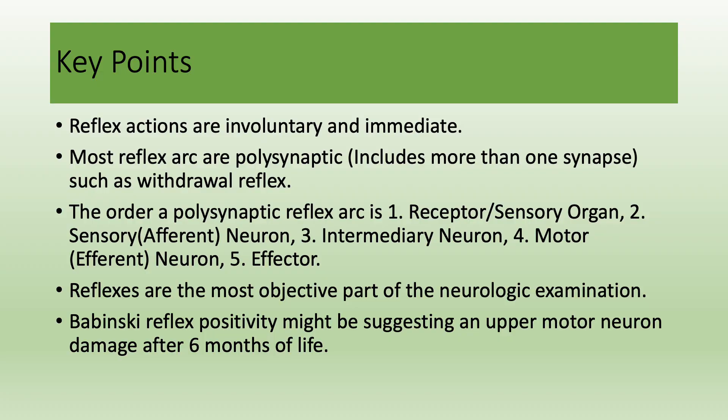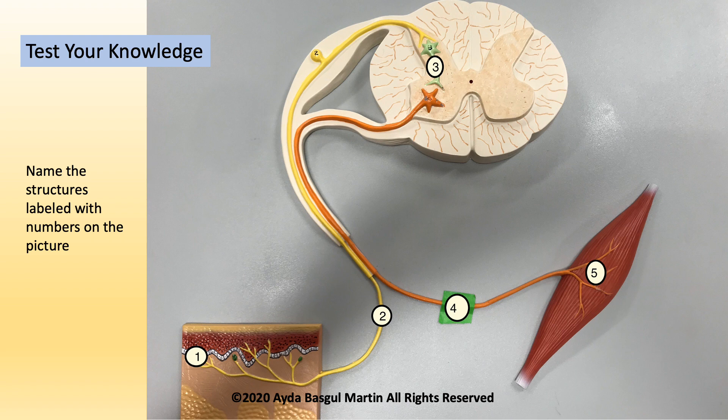Key points: reflex actions are involuntary and immediate. Most reflex arcs are polysynaptic. The order of the polysynaptic reflex arc is: first, receptor or sensory organ; second, sensory neuron; third, intermediary neuron; fourth, motor neuron; and fifth, effector. Reflexes are the most objective part of the neurologic examination. Babinski reflex positivity after six months of life may suggest upper motor neuron damage. Now test your knowledge: number four is the motor neuron, number two is the sensory neuron, number one is the sensory organ, number five is the effector organ, and number three is the interneuron.